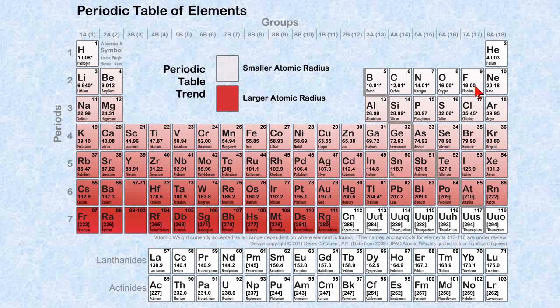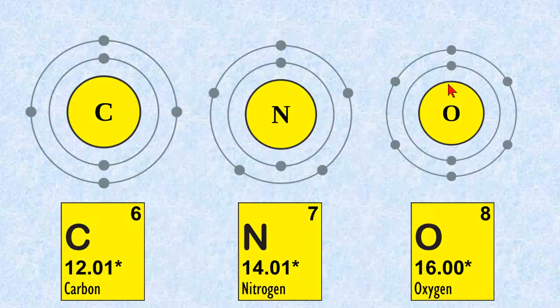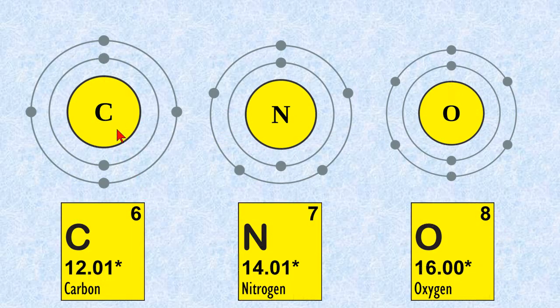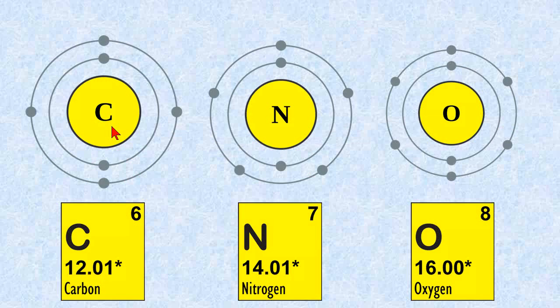Now let's look at elements that are in the same period. And we'll look at carbon, nitrogen, and oxygen. As you can see, the outer shells seem to be very similar in diameters. The only difference is we add one more electron as we go from carbon to nitrogen to oxygen. So there's only a difference of three electrons between these.